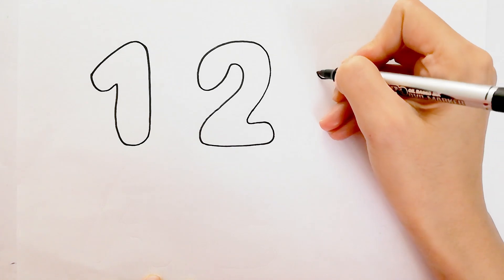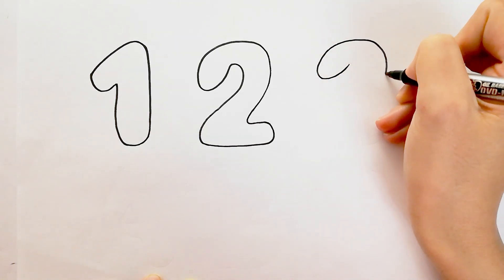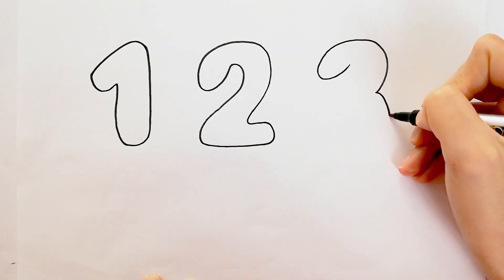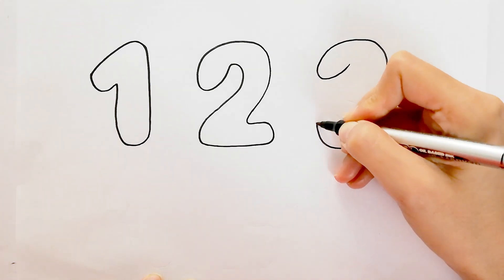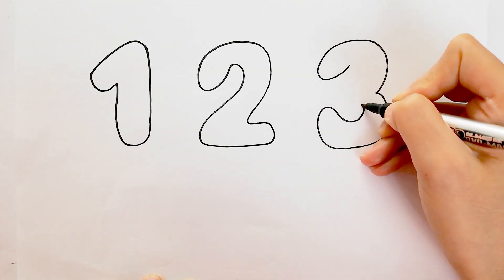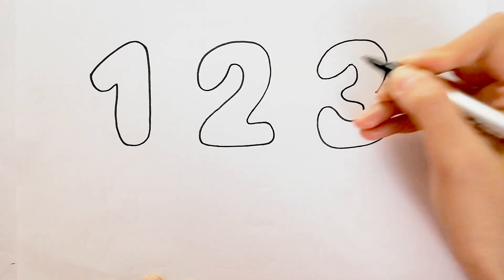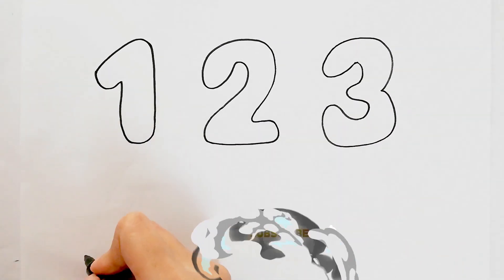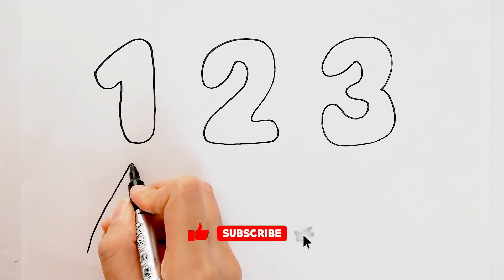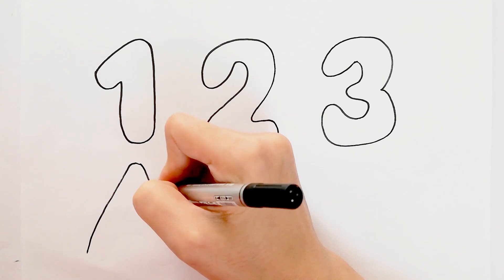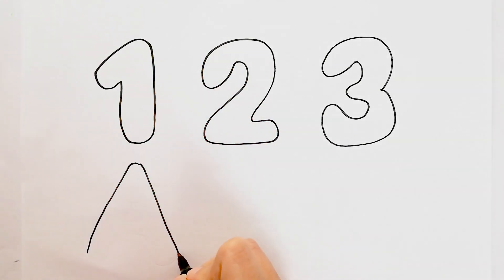A, B, C, D, E, F, G, H, I, J, K, L, M, N, O, P, Q, R, S, T, U, V, W, X, Y, and Z. Now I know my ABCs, next time won't you sing with me?